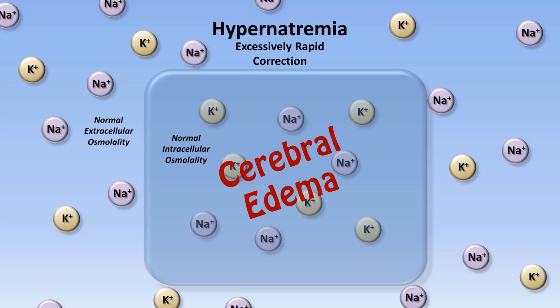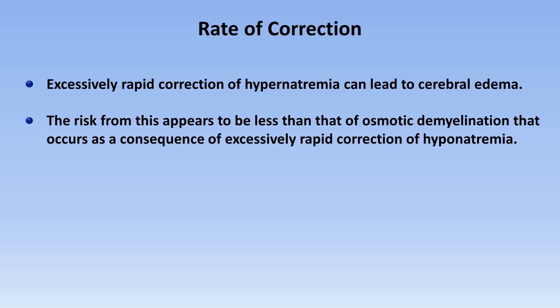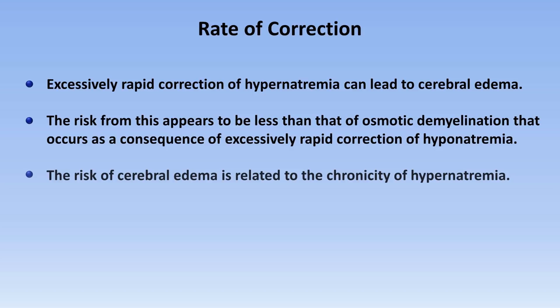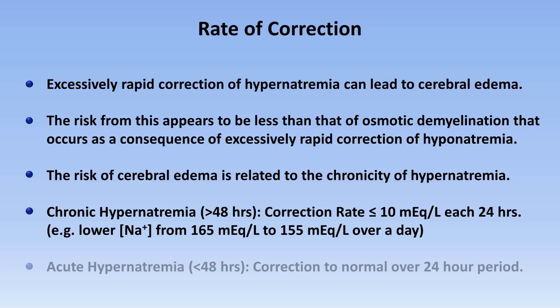The risk of this appears to be less than that of osmotic demyelination that occurs when hyponatremia is corrected too rapidly. As with that other situation, the risk of cerebral edema is related to the chronicity of the hypernatremia, so the goal correction rate in chronic and acute hypernatremia differs. In hypernatremia developing for more than 48 hours, the recommended correction rate is to decrease the serum sodium by less than or equal to 10 mEq/L every 24 hours — for example, bringing a serum sodium of 165 down to 155 over the course of an entire day. In hypernatremia present for less than 48 hours, the goal is to correct it back to normal over a 24-hour period, irrespective of where you start.